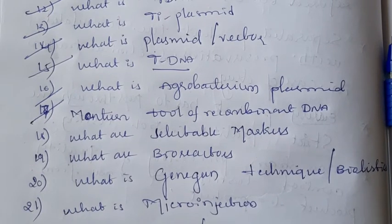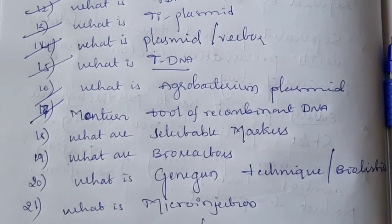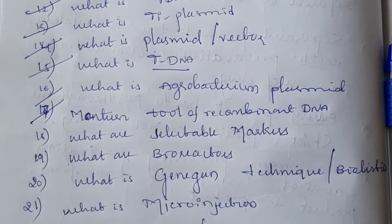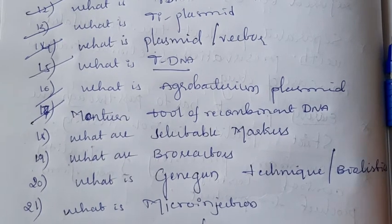Next question: what are selectable markers? Selectable markers are ampicillin-resistant genes and tetracycline-resistant genes, which are present in the artificially synthesized plasmid. They are helpful for differentiating between recombinant transformants and non-transformants. The presence of selectable markers shows the difference between transformants and non-transformants.